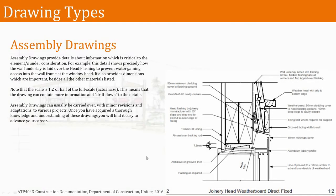Finally, we have assembly drawings, which provide critical information about specific elements. For example, looking at window elements, we want to see how they are assembled and constructed in the wall. We can see the outside of the building, the weatherboard coming down, the head of the window, the lining and architrave around the window, the internal lining, the jib lining, and the building frame. Note this is a 1 in 2 scale — half its actual size — which allows us to see it in good detail.